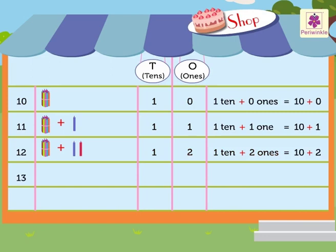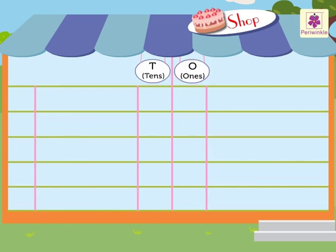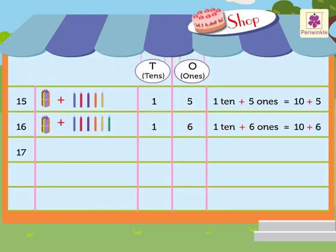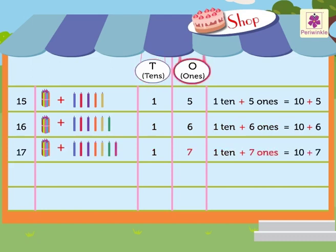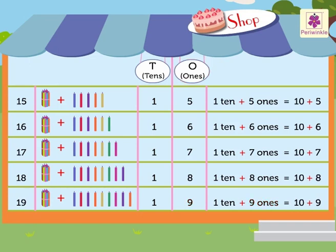Number 13 has one ten and three ones. Number 14 has one ten and four ones. Number 15 has one ten and five ones. Number 16 has one ten and six ones. Number 17 has one ten and seven ones. Number 18 has one ten and eight ones. Number 19 has one ten and nine ones. This is how the numbers ten to nineteen are placed in the tens and ones column.